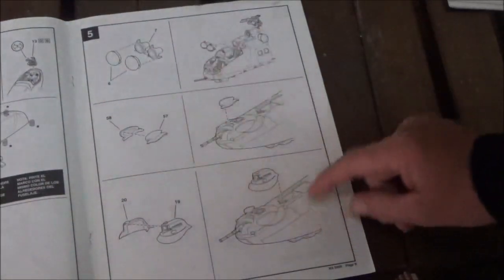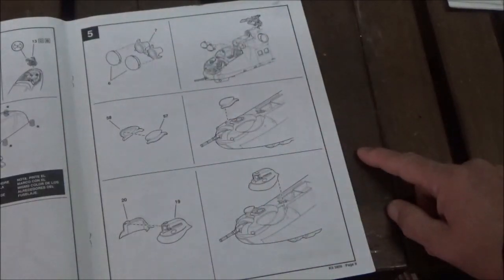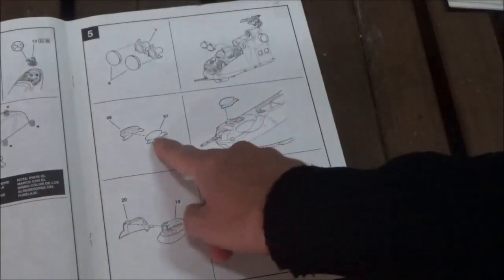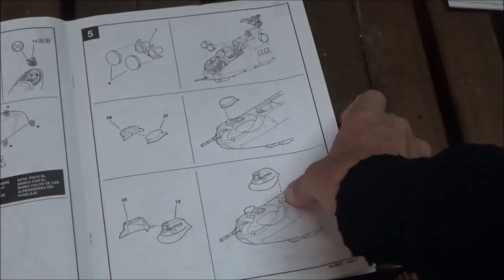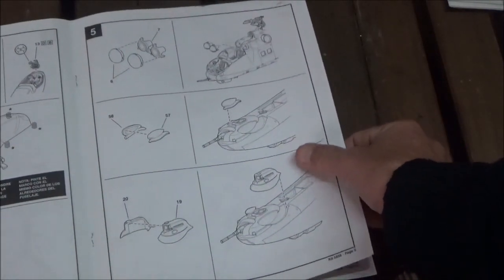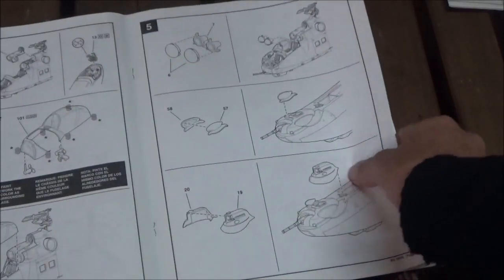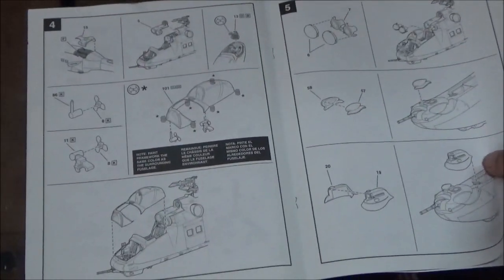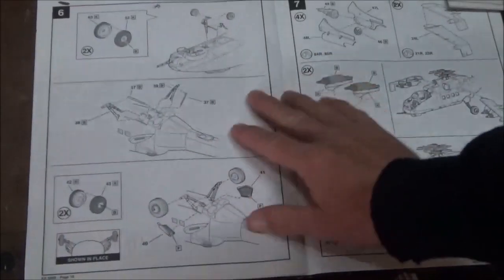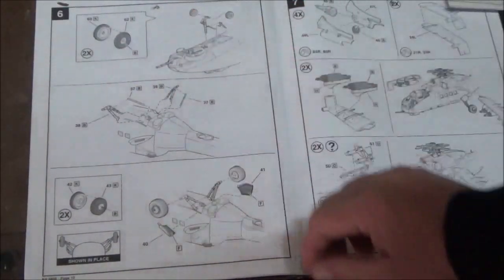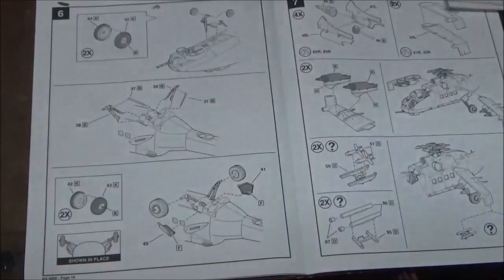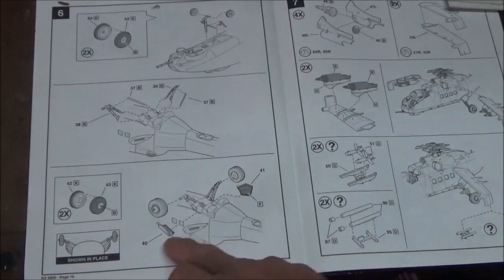Here are the covers for the intakes, putting that on. Some of the instruments, also the pod that goes on the bottom. The instruction sheet is pretty simplified in small steps. Here we're doing the front landing gear, the main landing gear, the wheels, and the landing gear bay doors.